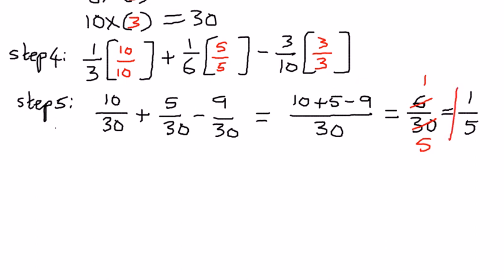So therefore, this is our answer. When we had 1 over 3 plus 1 over 6 minus 3 over 10 and simplified it using the procedure we discussed, it simplifies to 1 over 5. That is how we perform subtraction of fractions with different denominators. In my next presentation, we shall see more examples of subtraction of fractions with different denominators.